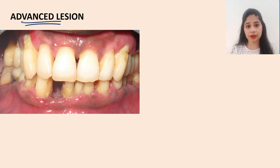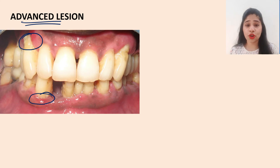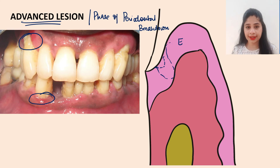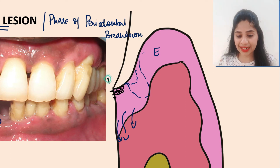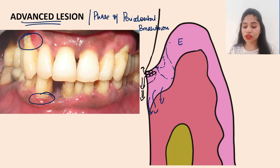Once we move to Stage 4 — the advanced lesion — the condition becomes irreversible. This is essentially a stage of periodontitis, with extensive gingival inflammation and periodontal destruction, including recession and loss of teeth. Histopathologically, the epithelium shows ulcerations exposing the connective tissue, and the junctional epithelium shows apical migration — the hemidesmosomal attachment breaks down and the junctional epithelium migrates apically.